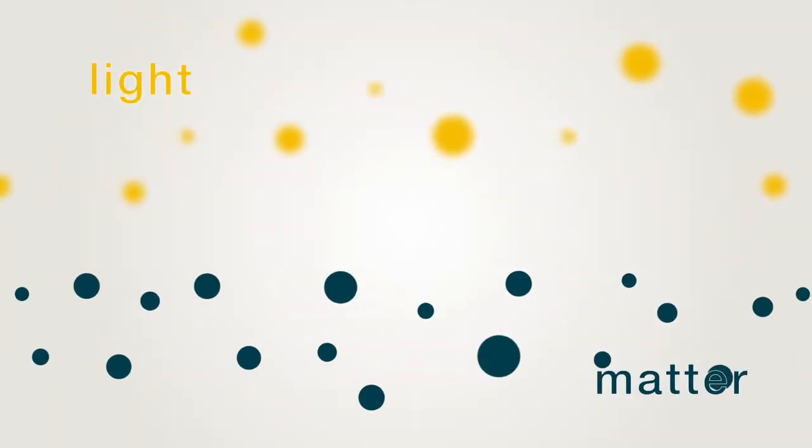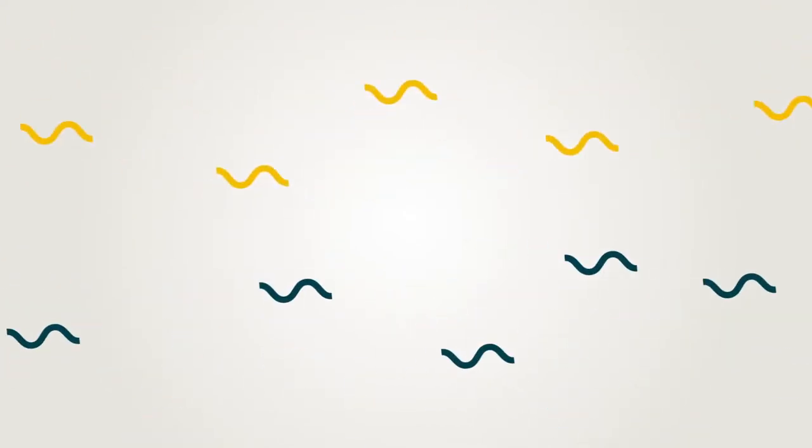Light and matter both behave partially like particles and partially like waves. So what distinguishes light from matter?